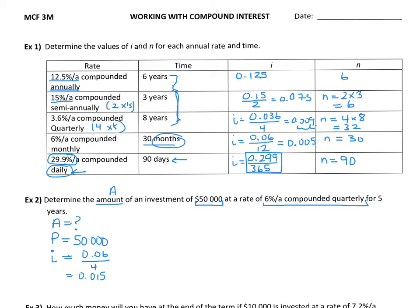And we're compounding quarterly, so four times every year for five years. So quarterly, four times per year for five years, that gives us 20. It's going to compound 20 times overall.